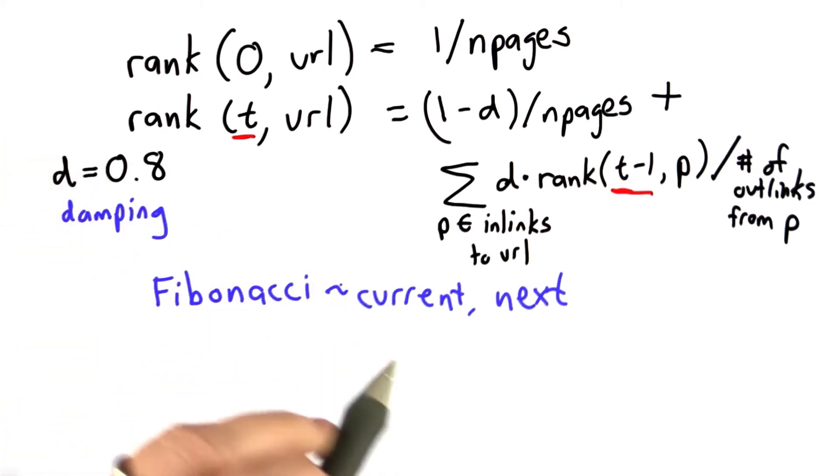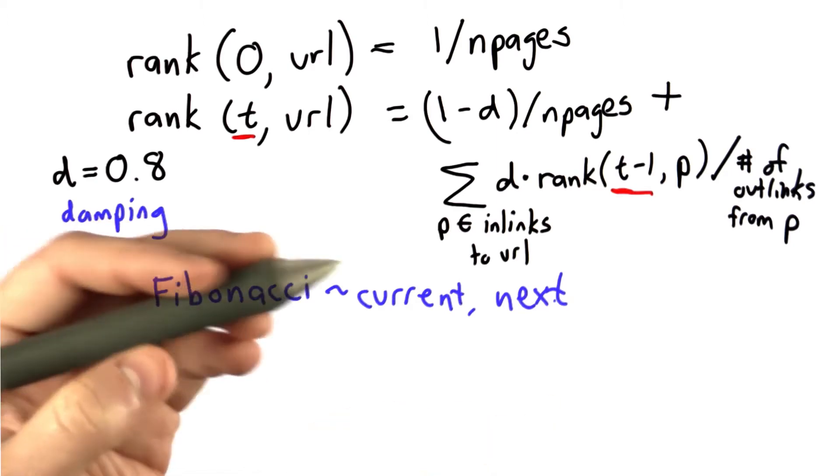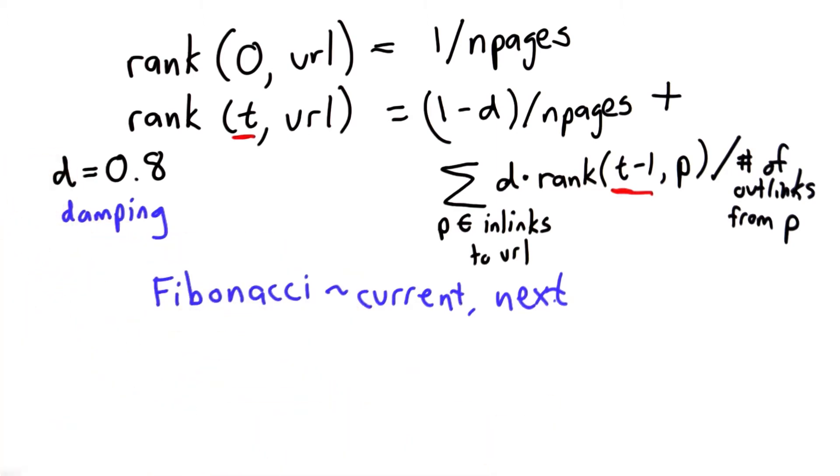When we did Fibonacci, we kept track of current and next in variables, and that allowed us to keep track of the previous and the previous previous Fibonacci numbers. What we want to do with ranks is something similar.